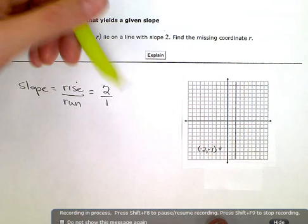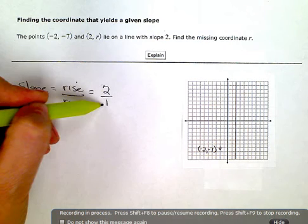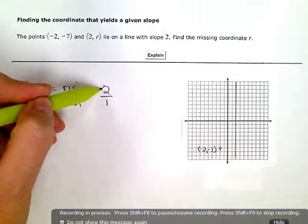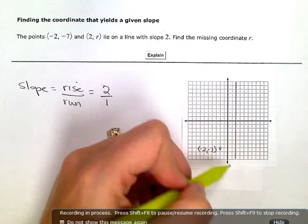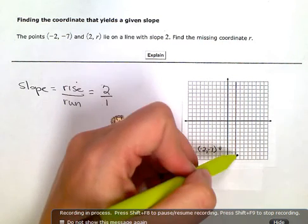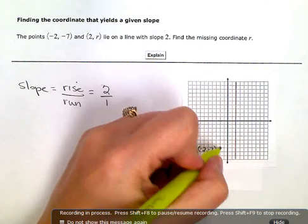That means from this point, I need to go up 2, forward 1. I'm just going to go up 2, forward 1 until I hit this line. Then I know that's where my point needs to be. Up 2, forward 1, up 2...